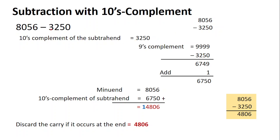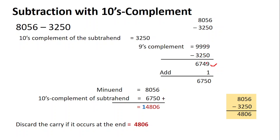Once we are sure that the number of digits are the same, let's find the tens complement of the subtrahend. To find the tens complement, first find the nines complement, then add one to it. To find the nines complement, write four nines (one two three four), then write the given number as it is, and subtract: nine minus zero is nine, nine minus five is four, nine minus two is seven, nine minus three is six.